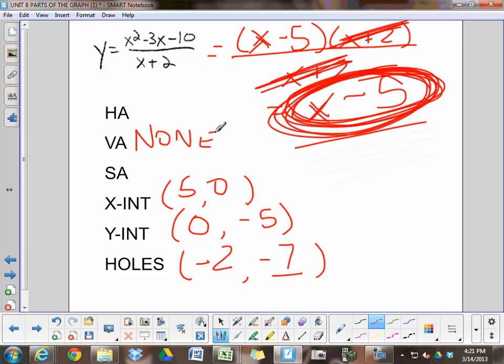Horizontal asymptote. Top-heavy. None. Slant asymptote. Everything canceled, so it's going to be none.